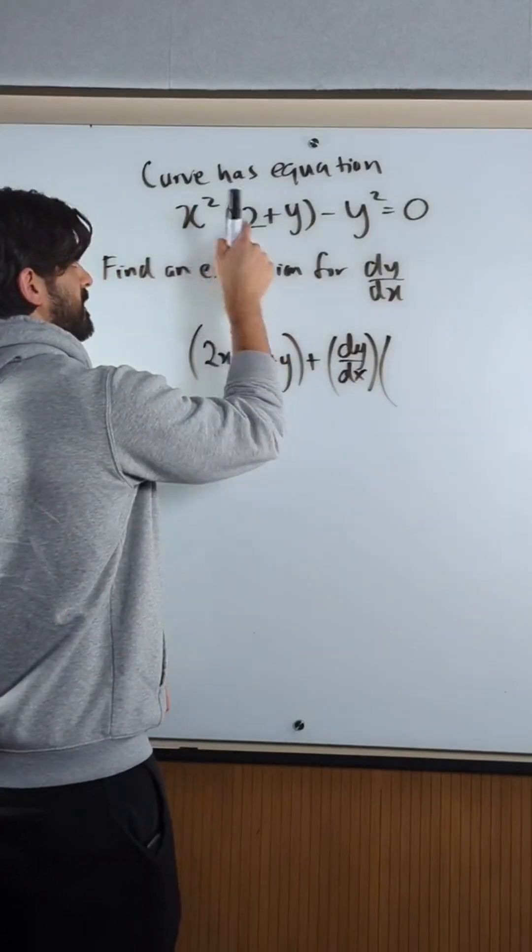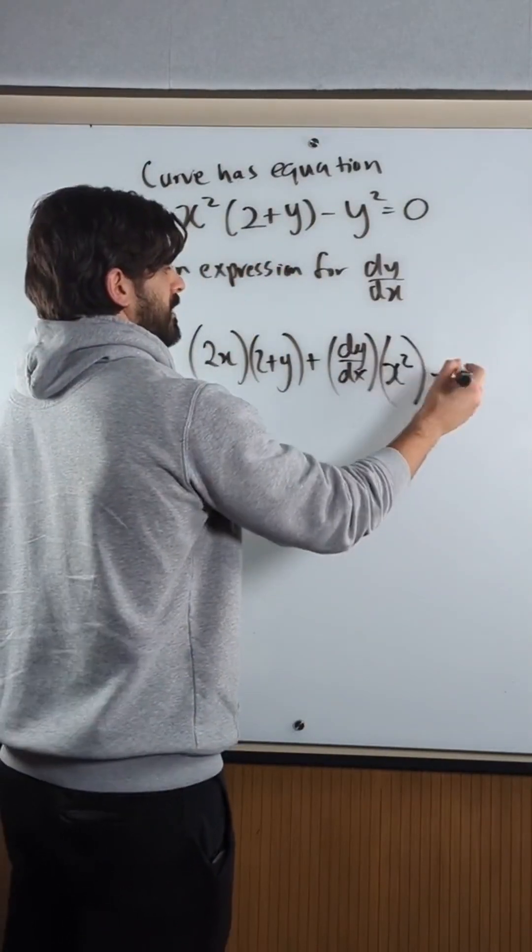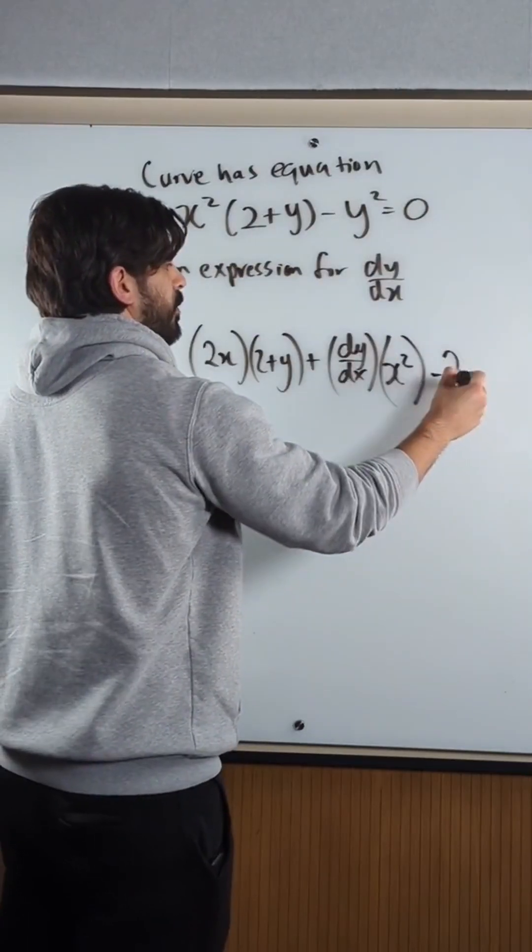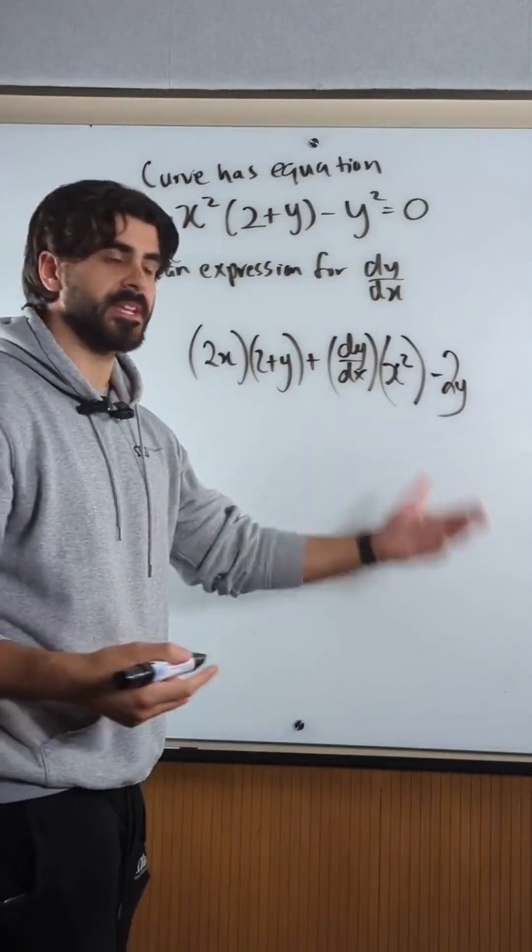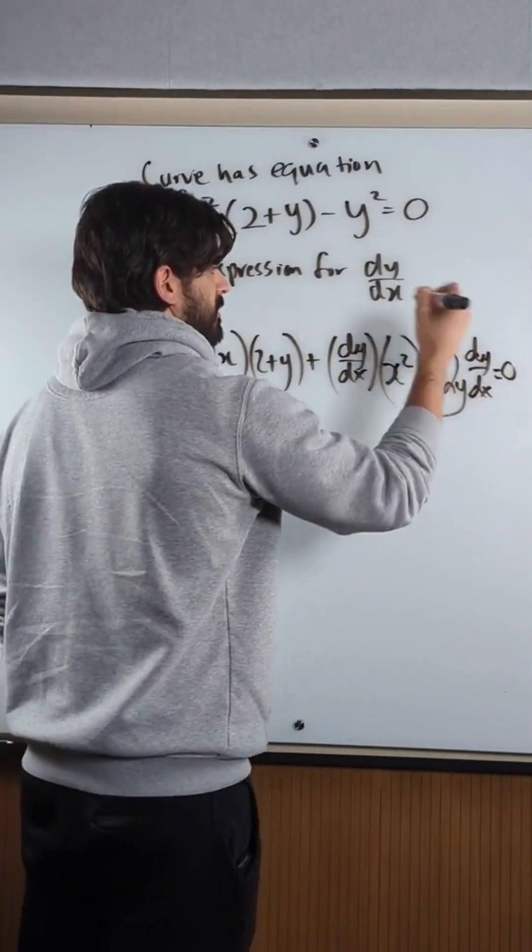So differentiate the first term times the second, differentiate this times this, minus differentiate this - 2y. Differentiated a function of y with respect to x, we times it by dy/dx. Equals 0.